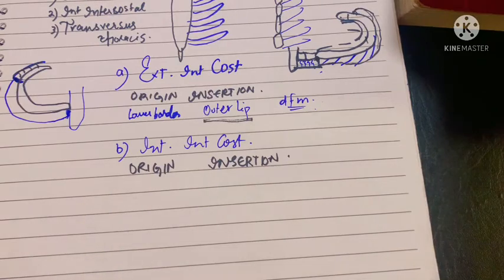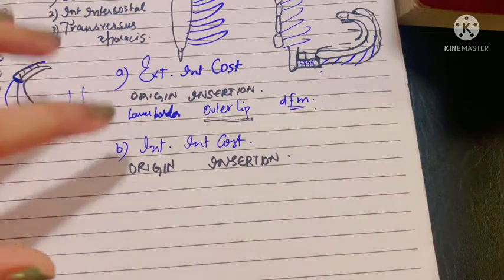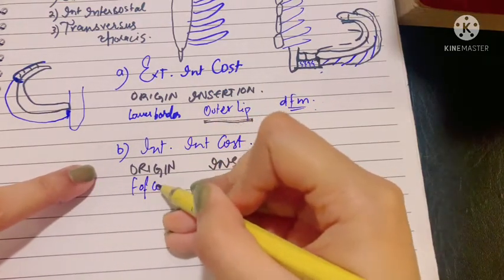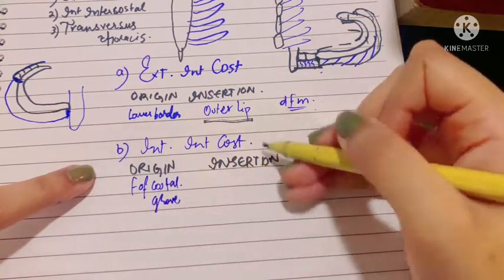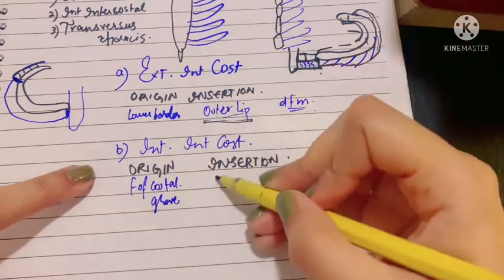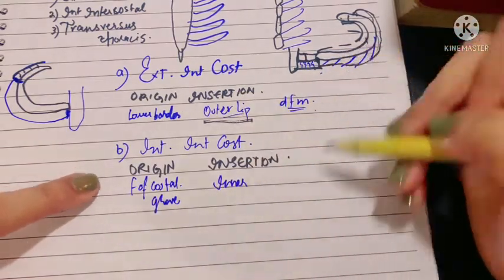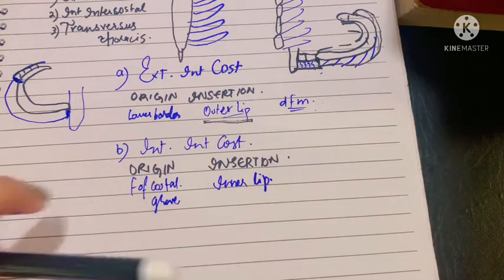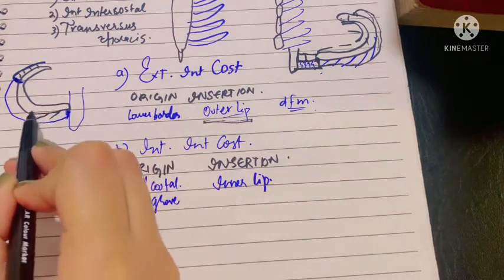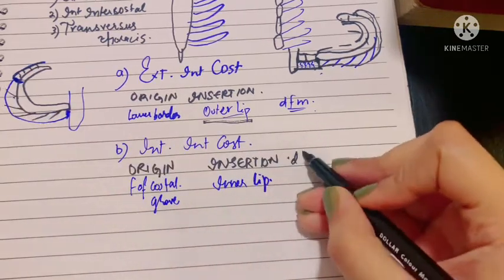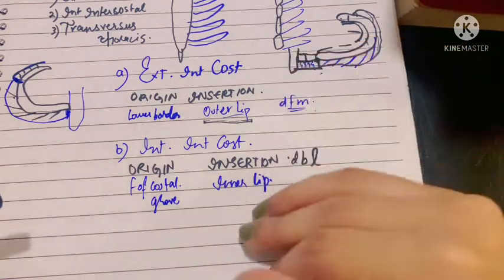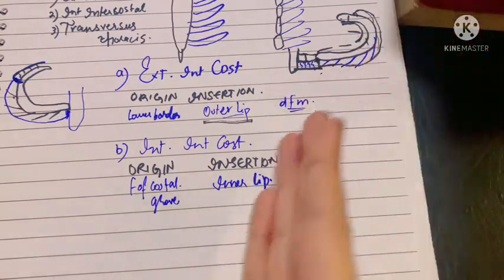The internal intercostal muscle forms the posterior intercostal membrane, while the external intercostal forms the anterior intercostal membrane. Its origin is from the floor of the costal groove, and it gets inserted into the inner lip of the upper border of the rib below. So they are complete opposites. The direction of the internal intercostal fibers is downwards, backwards, and laterally — the fibers run completely at right angles to one another compared to the external intercostal.